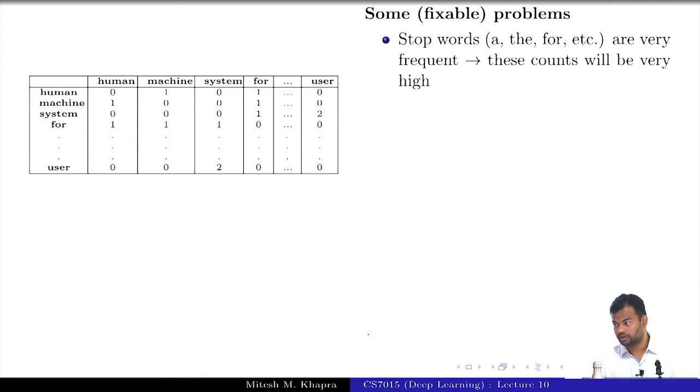There are some problems, some of which are fixable. We will look at the fixable problems first. The first thing is the stop words are very frequent, so these counts would be very large. If you take the entire Wikipedia corpus and you take the word machine or system, then the words 'the' and 'for' and so on would have appeared like more than 1000 times in the context of the word machine, as compared to the other words like system or user which would have appeared much fewer times. This kind of skews your counts. It is heavily biased in favor of stop words.